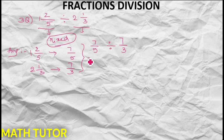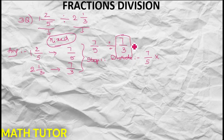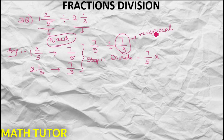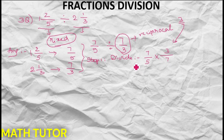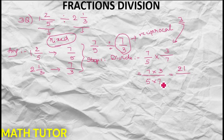Now we follow the steps. Step 1: in division, the first fraction 7 by 5 stays the same, the division symbol converts to multiplication, and we find the reciprocal of 7 by 3, which is 3 by 7. So now it is 7 by 5 times 3 by 7 — a normal fractions multiplication. Multiply the numerators: 7 times 3 is 21. Multiply the denominators: 5 times 7 is 35.